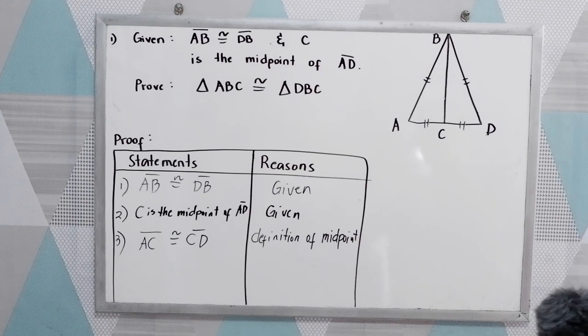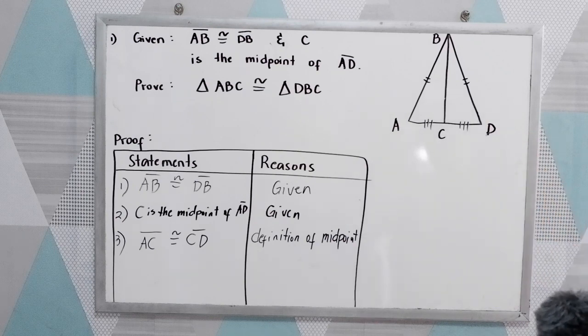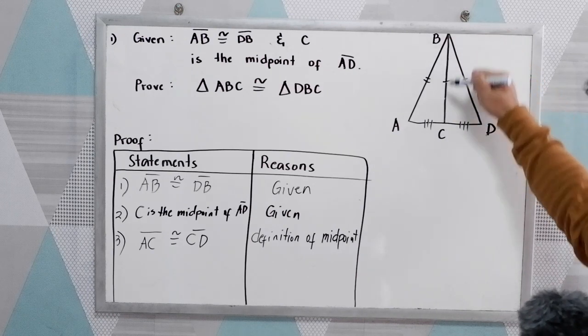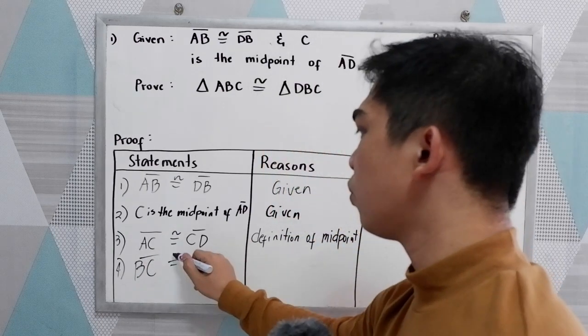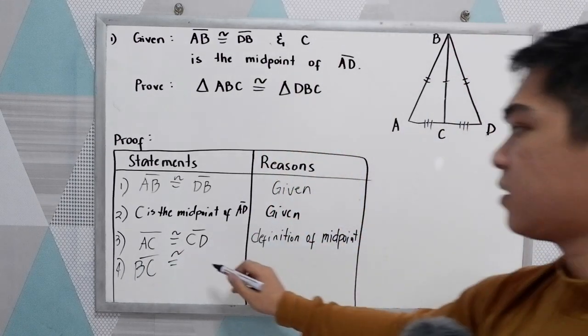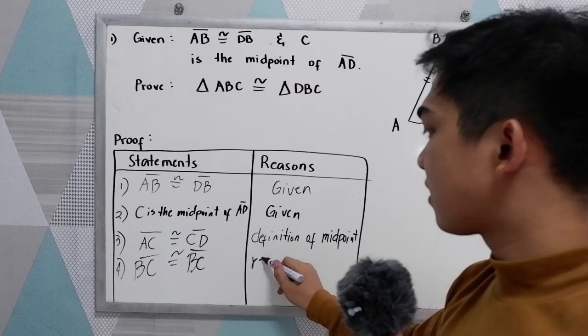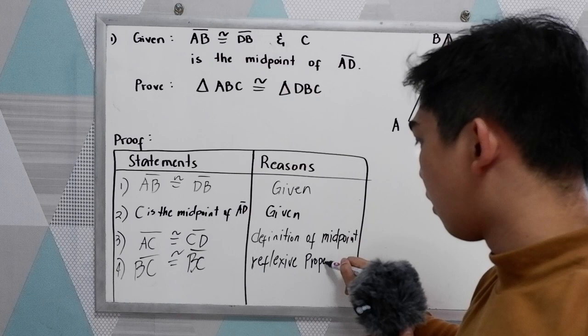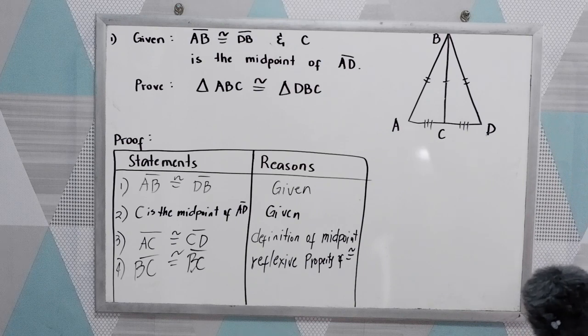Now we have side and another side. We can say that BC is congruent to BC. That is by reflexive property of congruence. BC is equal to BC.